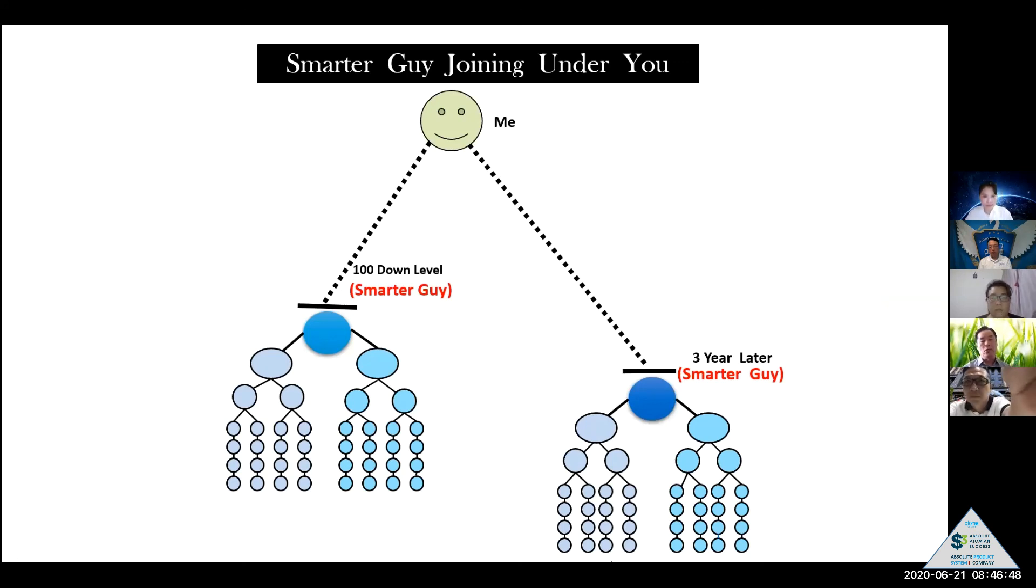You are still not happy because some company pay you based on smaller group. It is okay. If you fully understand the business principle, you never ever quit because one day, someday, three year later, five year later, even seven year later, 110,000 down level, one big smart guy joining under you.